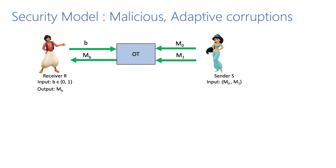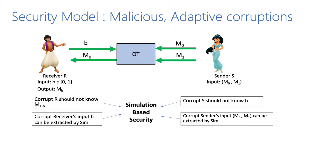Let me briefly recall the security properties required from our OT protocols. Firstly, the corrupt receiver should not know M_{1-B}, and the corrupt sender should not know B. To get simulation-based security, we need a probabilistically polynomial-time simulator sim, such that it can extract a corrupt sender's and a corrupt receiver's input, given the trapdoors of the setup string or some extra power.